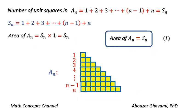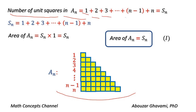The number of unit squares in block set An equals 1 plus 2 plus 3, up to plus n minus 1 plus n unit squares. That is equal to Sn. Also, the area of An equals the number of unit squares in An, that is Sn times one unit square, that is Sn unit squares.